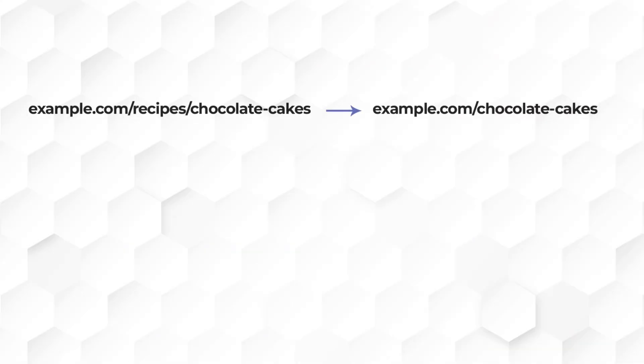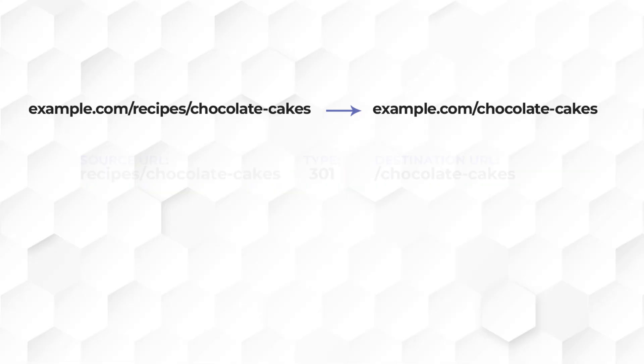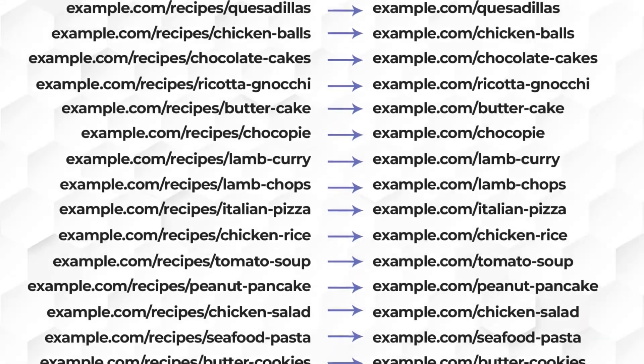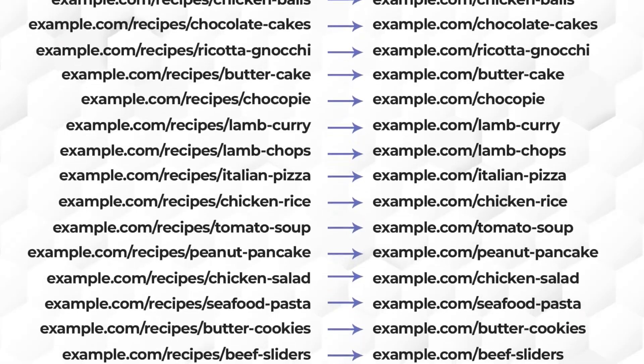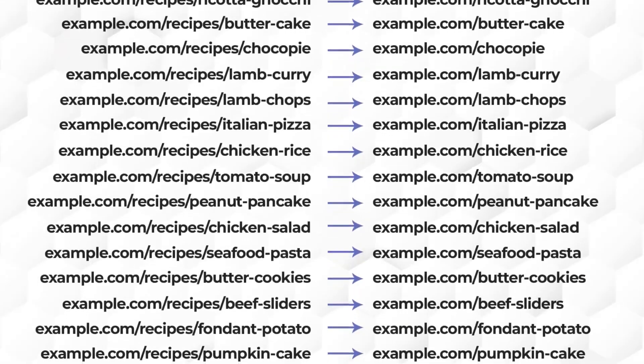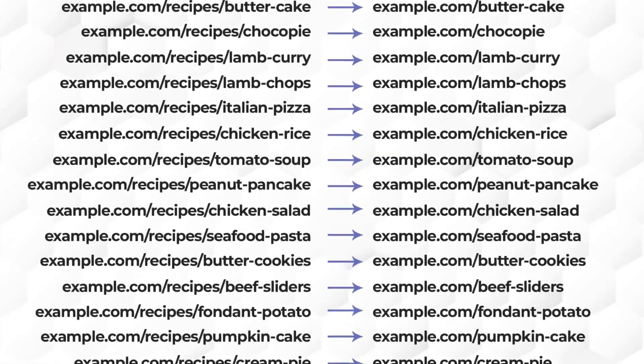Regex is simply the short form for regular expression. It allows you to perform repetitive tasks automatically using pattern matching within text. For example, if you wish to redirect one URL to another, you can manually set up each redirection. But what if you have hundreds of URLs to redirect? Manually creating hundreds of redirects can lead to link management problems and you may miss some redirects.